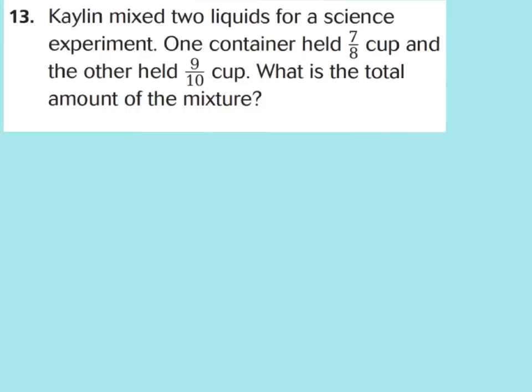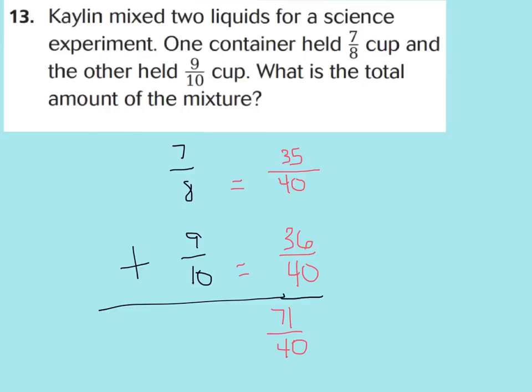So let's take a look at our word problems at the bottom of the page. Kaylin mixed two liquids for a science experiment. One container had seven-eighths cup, and the other had nine-tenths cup. What is the total amount of the mixture? Go ahead, find your equivalent fractions, and add, and see if you get the same answer I do. You can press pause right now. The least common denominator that 8 and 10 shared is 40. So nine-tenths equals 36 fortieths, and seven-eighths equals 35 fortieths. Now we're going to go ahead and add this together. You should say 35 plus 36 as my numerator is going to equal 71 over 40. Now, you can definitely see this as improper, so when you change it to a mixed number, you're going to have one whole and 31 fortieths left over. So the total amount of the mixture would be one cup and 31 fortieths of another cup.